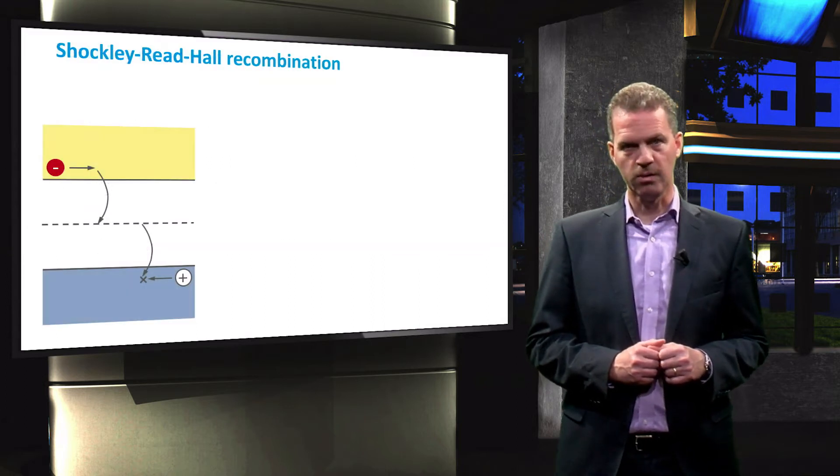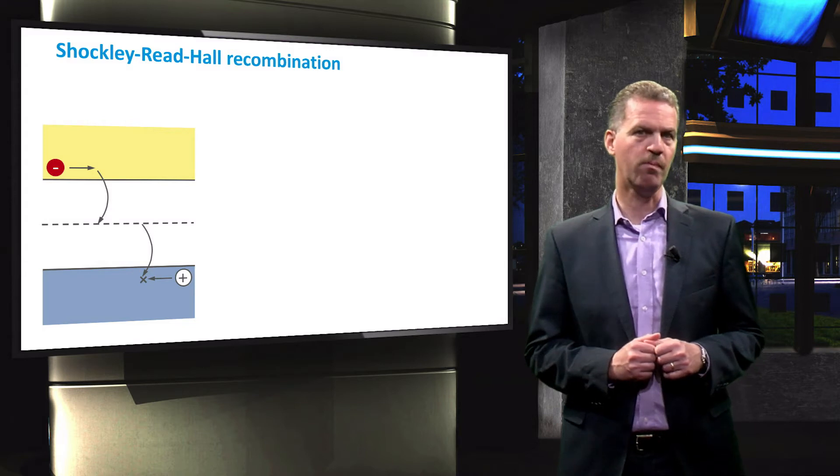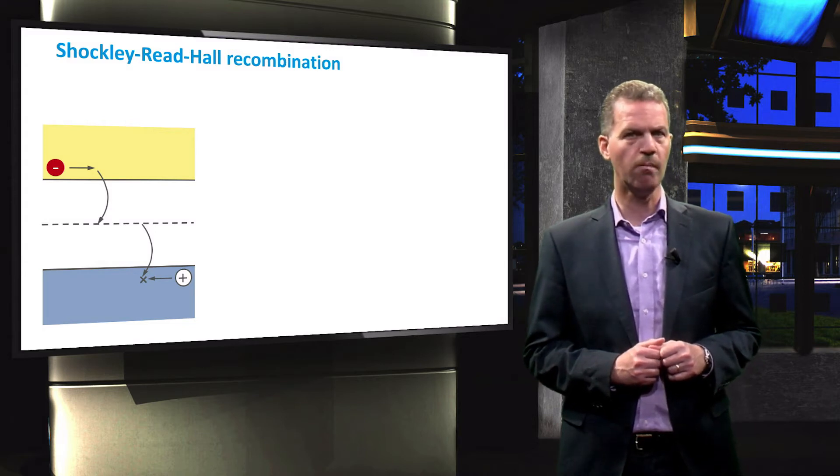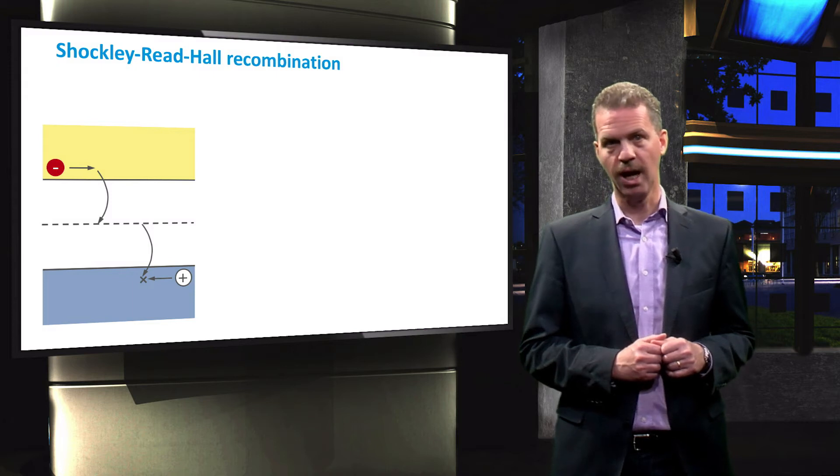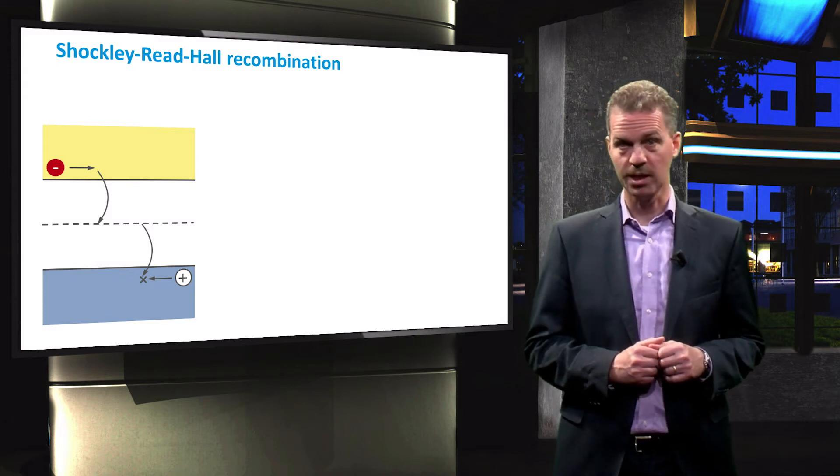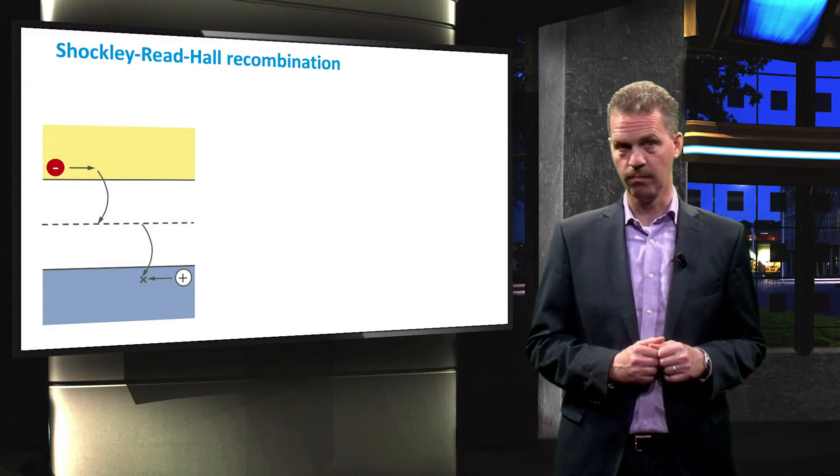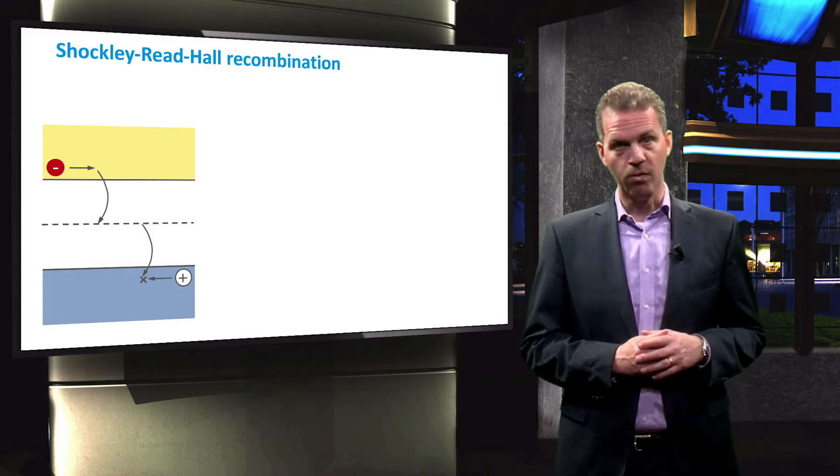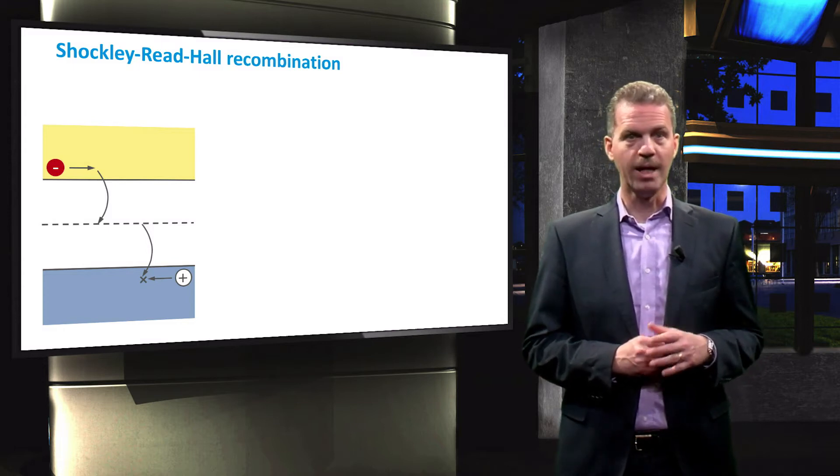The theory of this recombination mechanism was published in 1952 by William B. Shockley, William T. Reed and Robert N. Hall, which explains the name of the mechanism. It will be abbreviated in this video by SRH.